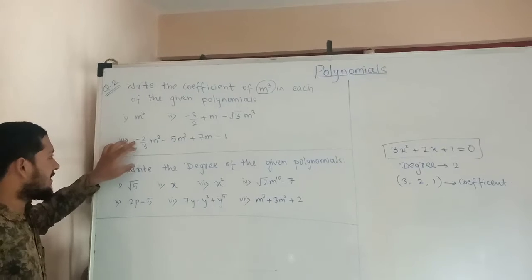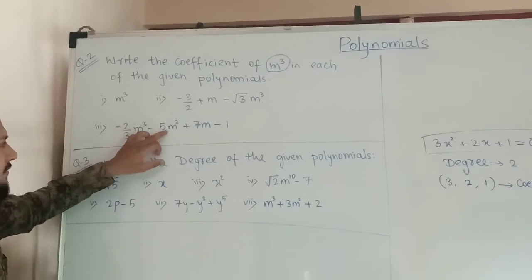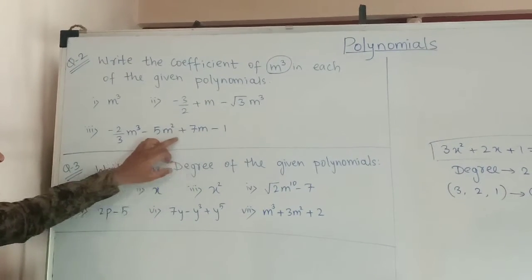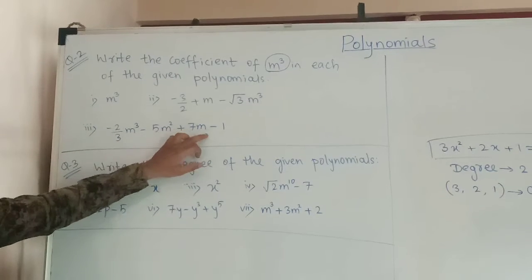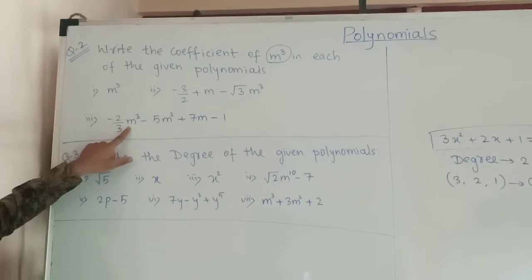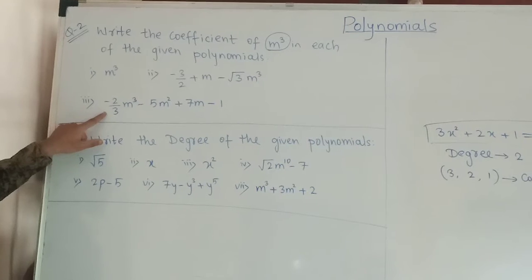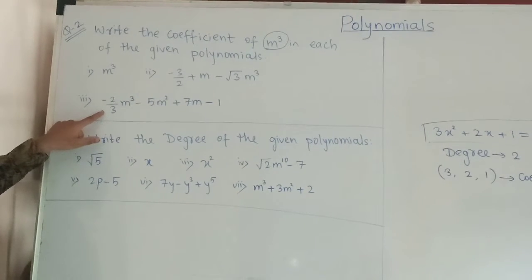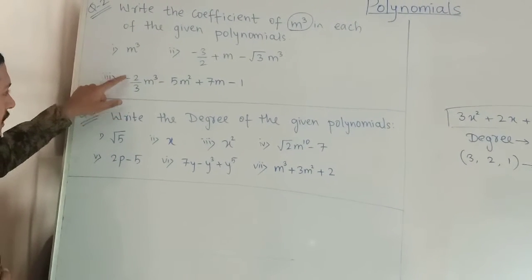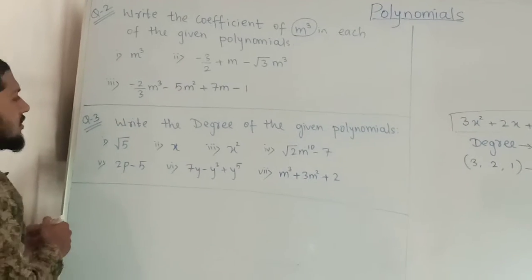The third example is: minus 2 upon 3 times n cubed minus 5n squared plus 7n minus 1. In this polynomial we have to find where n cubed is, and we find the coefficient of n cubed. The multiple of n cubed is minus 2 upon 3, so the coefficient of n cubed is minus 2 upon 3.